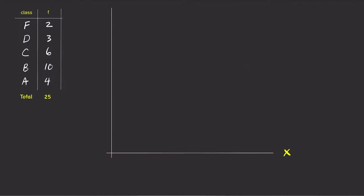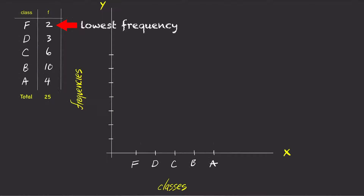To construct a frequency histogram, draw a graph. Classes will be labeled on the x-axis and frequencies will be labeled on the y-axis. Use five ticks on the x-axis to mark the five classes. Since the lowest frequency is two and the highest frequency is 10, using 10 ticks on the y-axis going from one to 10 will be enough to mark all the frequencies.